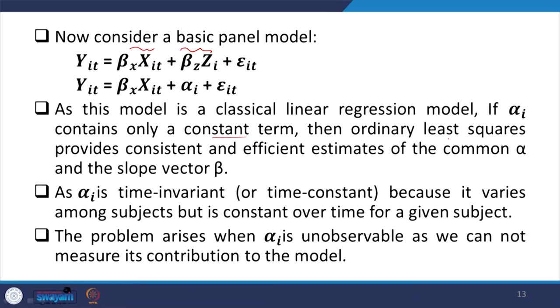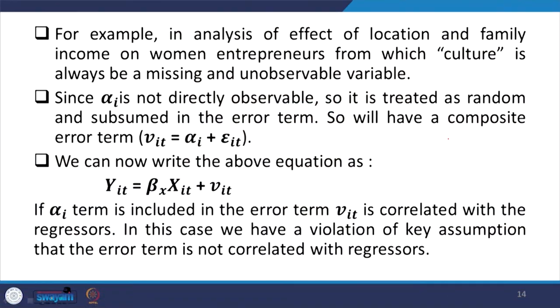The problem arises when alpha_i is unobservable and we cannot measure its contribution to the model. For example, in an analysis of the effect of location and family income on women entrepreneurs, culture would always be a missing or unobservable variable. Since alpha_i is not directly observable, it is treated as a random term and subsumed in the error term. The composite error term is defined as V_it = α_i + ε_it — alpha_i is included in the error term and is therefore correlated with the regressors.